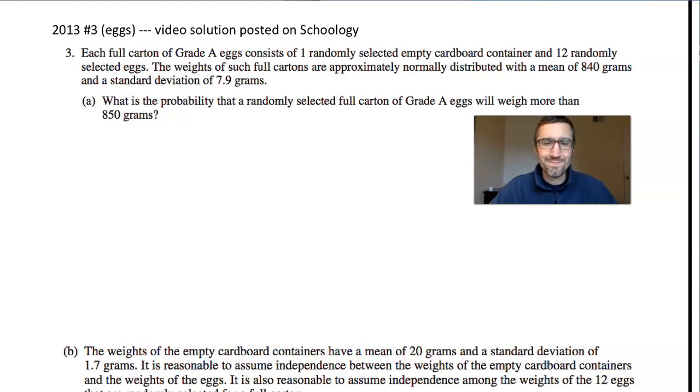Well, hello. Mr. Eicher here. Thanks for joining me. We're going to be looking at the solution and a little bit of the scoring of 2013 number 5, eggs. It has two parts, part A and part B, and part B has two subparts, B.I. and B.I.I. So let's check it out.